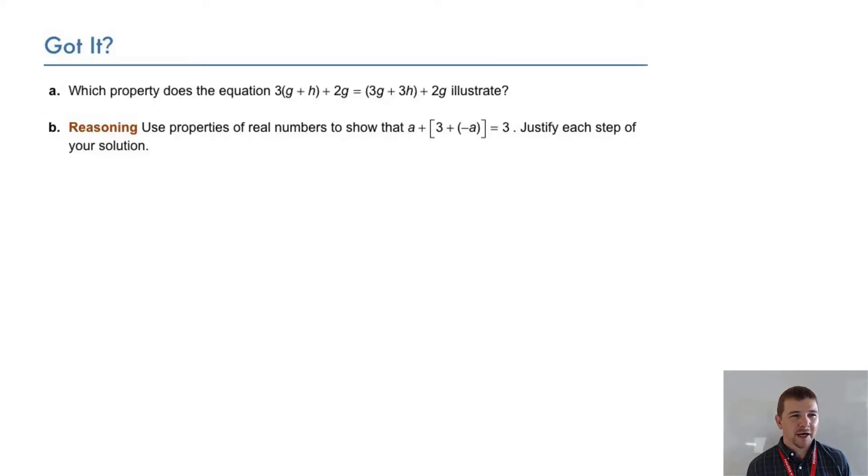Your turn. Part a. Which property does the equation three times the sum g plus h plus two g equals the quantity three g plus three h plus two g illustrate? And finally part b, a reasoning item. Use properties of real numbers to show that a plus the quantity three plus negative a equals three. Justify each step of your solution.